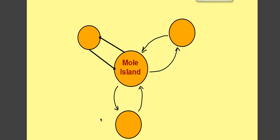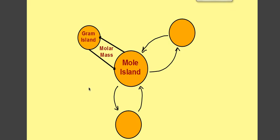This is Mole Island — welcome to Mole Island. Draw a circle in the middle with three circles around it like a triangle. The first island is Gram Island over here. If we want to go from Gram Island to Mole Island, the conversion factor we use is the molar mass — we divide by the molar mass, because the molar mass is in grams per mole. If we divide by the molar mass, we wind up with our number of moles.